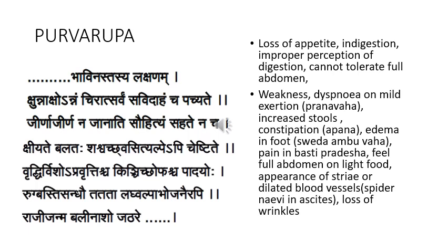Rukh bastisandavanda — all those places near the vasthi and bladder, there will be pain. Tadada lakhu alpabhojane rabhi — tadada means feeling of fullness even on light or little food. Raji janma vali nashe — the abdomen slightly starts increasing in size and shows some striations due to the stretching of skin; vali nasha, the wrinkles on the abdomen will be lost due to the stretching.